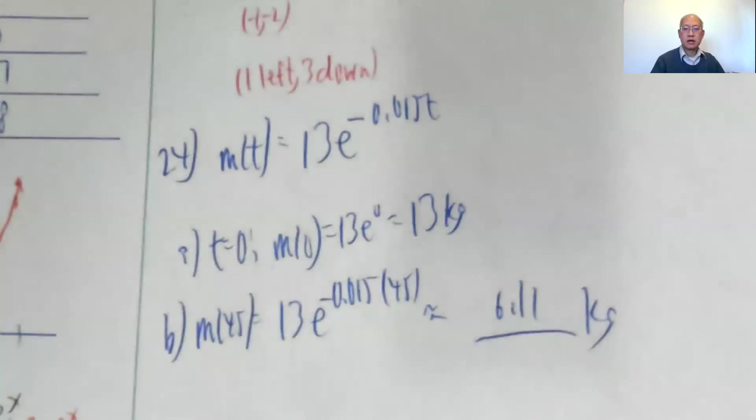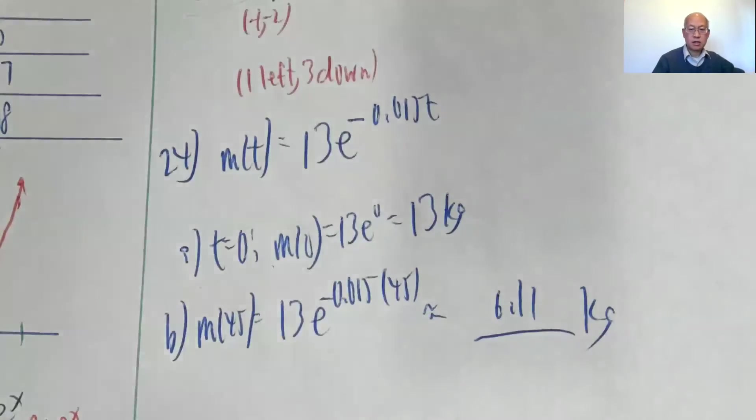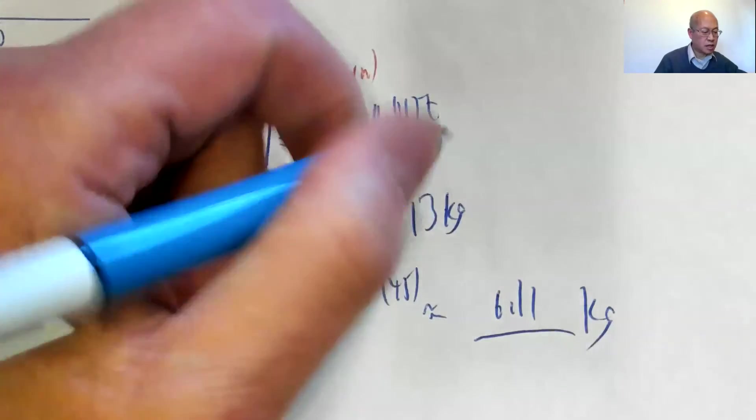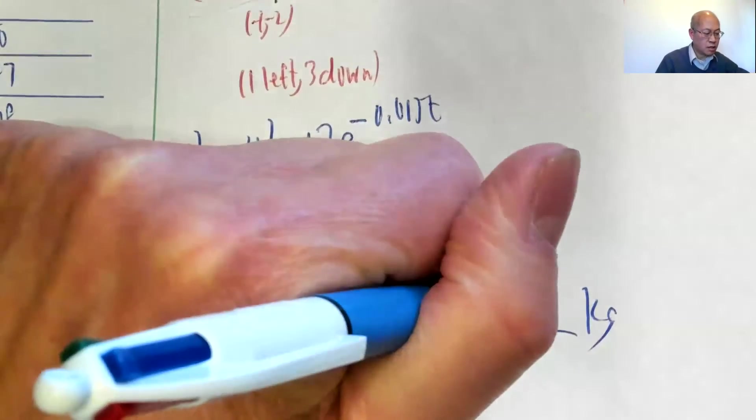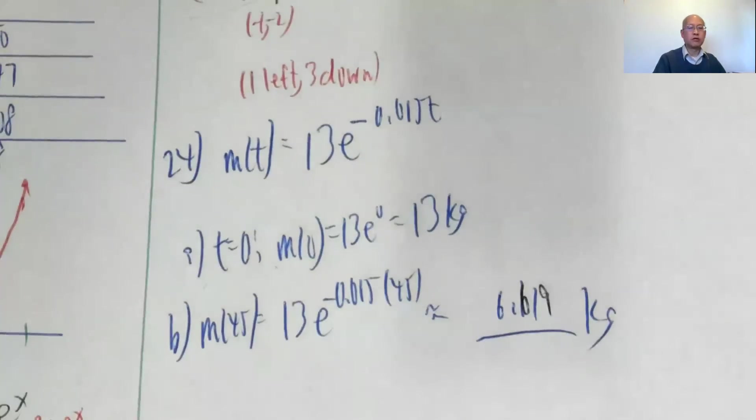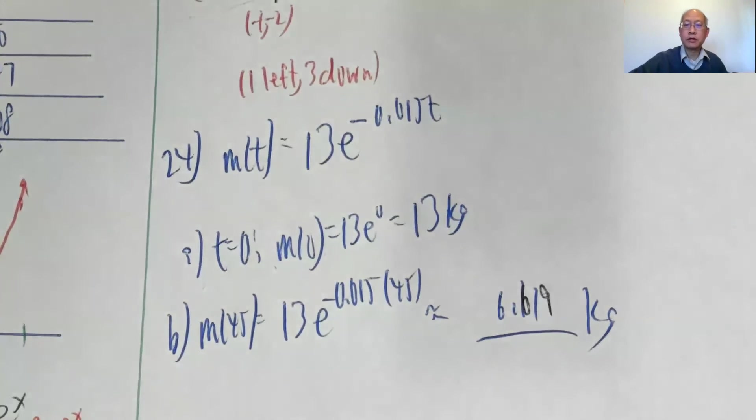6.619 is what I should, 6.619 kilograms total. All right, so that was section 4.2.